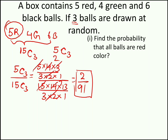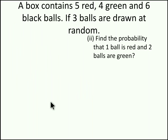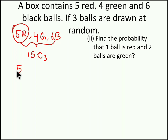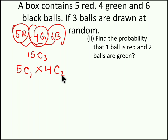Hope you understood the concept. Moving to our second question — it has the same box setup with 5 red, 4 green and 6 black balls. If 3 balls are drawn at random, find the probability that 1 ball is red color and 2 balls are green color. The sample space remains 15C3. What we exactly need is 1 red color ball: from 5 red we choose 1, and 2 green balls: from 4 green we choose 2, divided by 15C3.